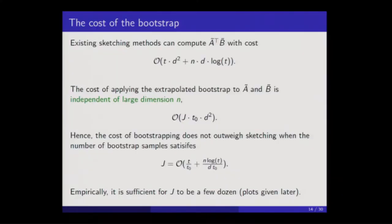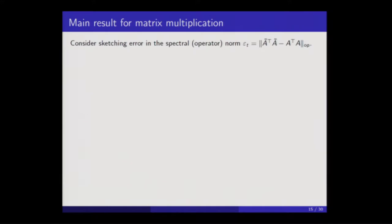The condition you want to satisfy is that the cost of bootstrapping should not be a larger order than the original cost of sketching, and that happens when the number of bootstrap samples satisfies a certain condition. The initial sketches do not have to give you a good product — they can actually give a very poor product, and that's fine, because I'm only interested in estimating the error. The number of bootstrap samples can be taken quite small in practice — usually a few dozen is good enough.